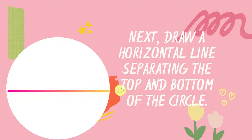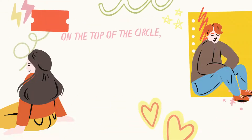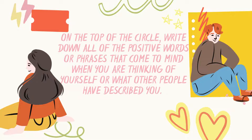Lalagyan nyo lang ng hati sa gitna ng circle — you are going to put a horizontal line in the circle. Now, sa loob ng circle, ano po ang ilalagay natin? On the top of the circle, sa kalahating part, nasa taas na parte, you are going to write down all the positive words or phrases that come to your mind when you are thinking of yourself or what other people have described you.